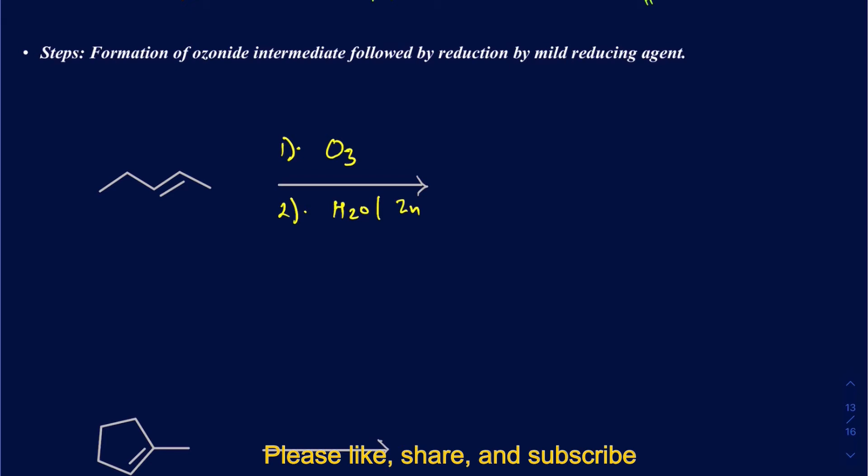Suppose I'm using ozone and water and zinc in the second step as a mild reducing agent. We need to break this up right here and see what's left on both sides. When we make this, draw both sides as they appear and then put the oxygens there. Keep track of your oxygens. This right there is that side, and the other left side had three carbons, which is what we have on this side here.